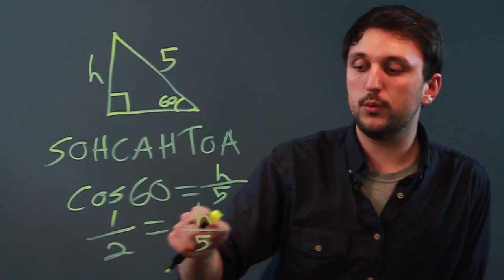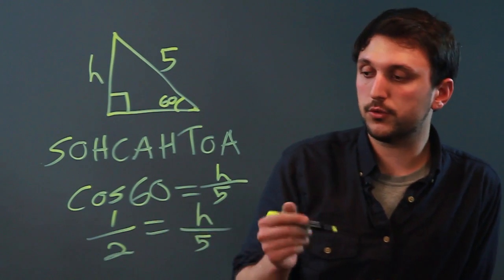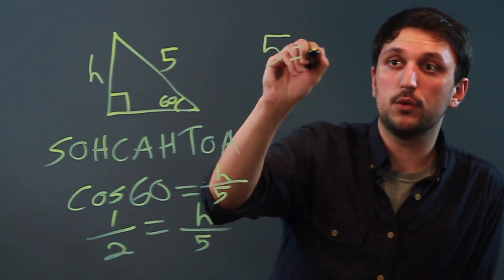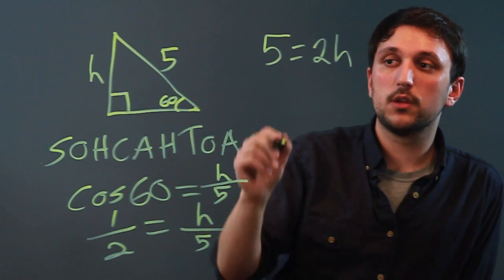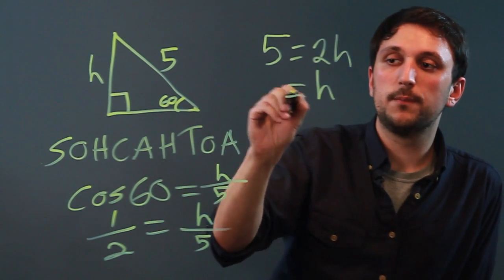So 1 over 2 equals H over 5. We cross multiply and we get 5 equals 2H. Thus H equals 2.5.